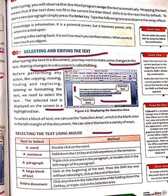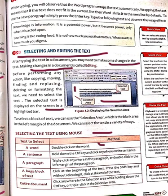Now the next one is selecting the text using the mouse. We can select the text using the mouse. Look at this table. To select a word, double-click on the word — double-click on the word and the word gets selected.